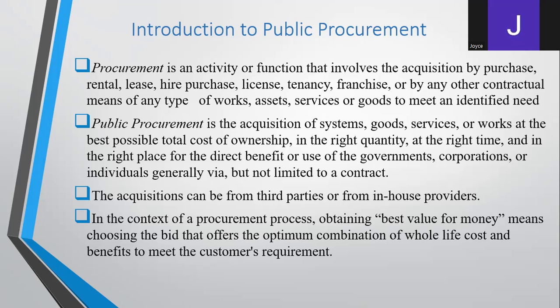Once you understand what procurement is, what then is public procurement? Public procurement is the acquisition of systems, goods, services, or works at the best possible total cost of ownership, in the right quantity, right time, and in the right place for the direct benefit or use of the government. The main focus of public procurement is to get value for money, and that is why before you buy something, you need to do due diligence or a market survey.